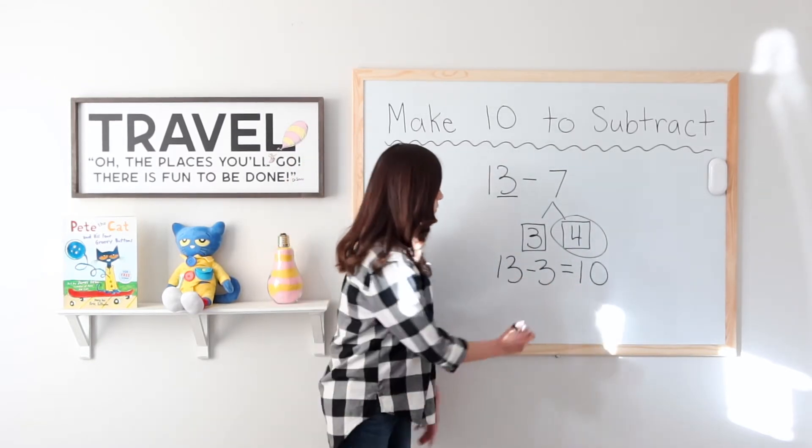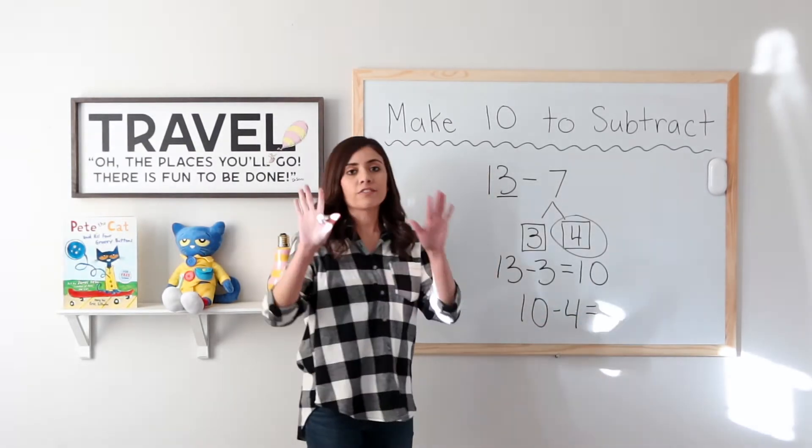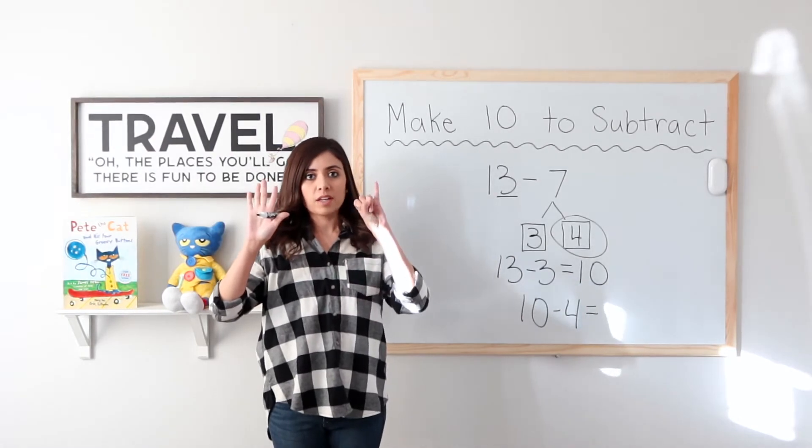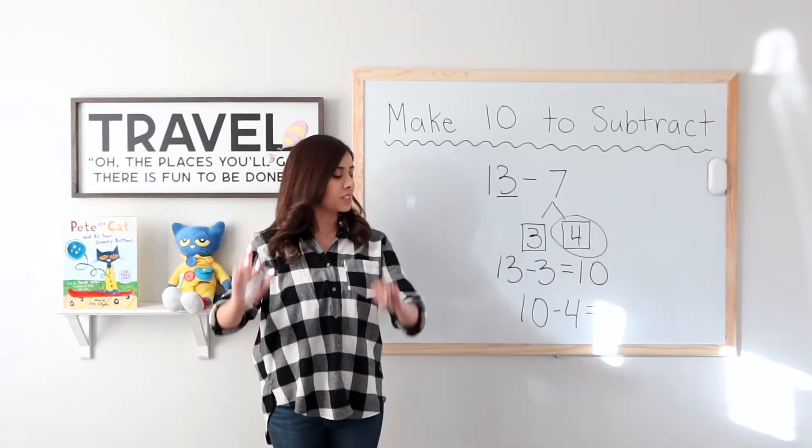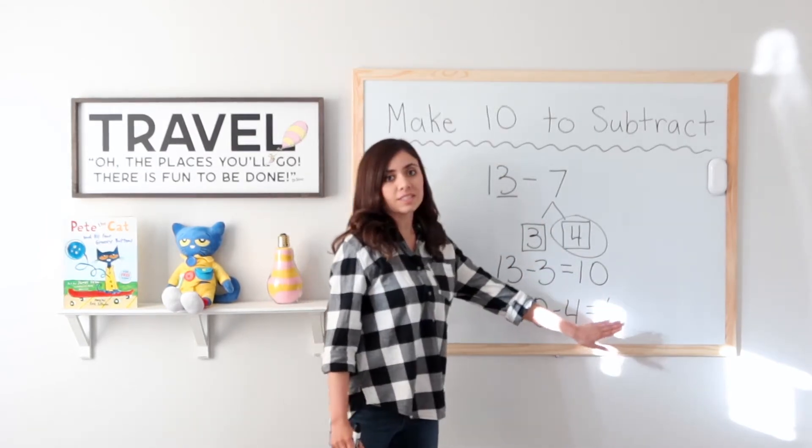Step 3 was to take our answer and subtract the second part, which is this one. So now I have 10 minus 4. 10 fingers put 4 down. 1, 2, 3, 4, 5, 6. 10 minus 4 equals 6.